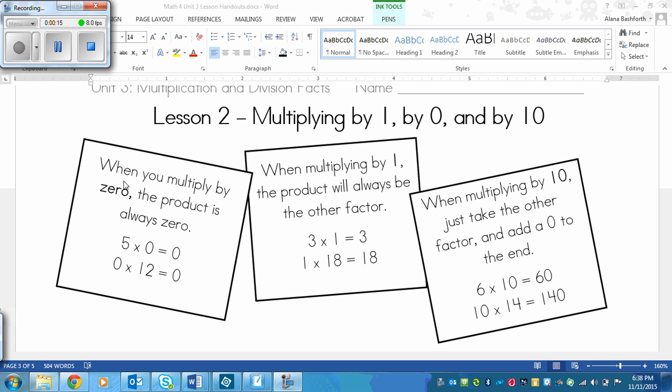So over here on the left, we've got a rule for 0. When you multiply by 0, the product is always 0. Simple as that. Doesn't matter if the 0 is the first number or the second number, it doesn't matter what the other number is, it's always going to end up being 0. So we have 5 times 0 equals 0, 0 times 12 equals 0. If I had 0 times a million, it would still be 0. So 0 is always 0.